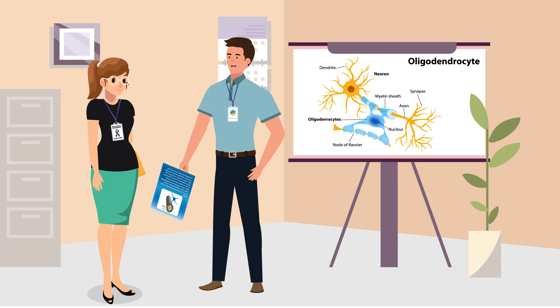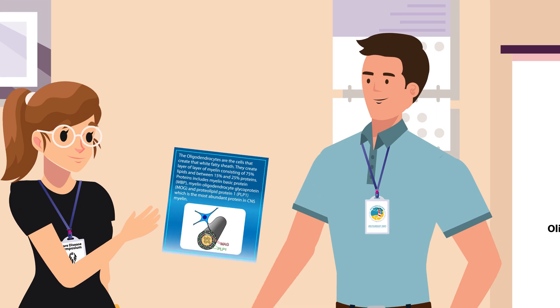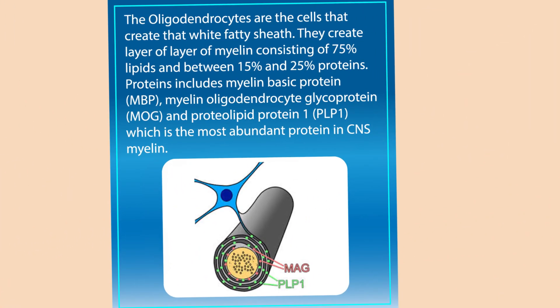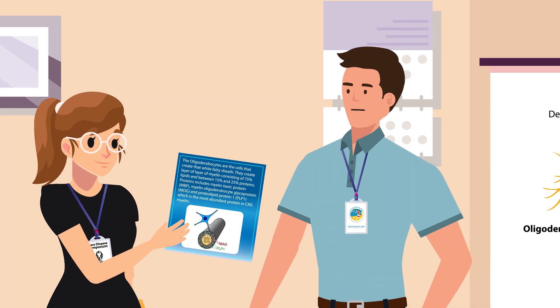The cells that make myelin are called oligodendrocytes, and they create the layer of the myelin sheath. What's important is that to produce myelin, the oligodendrocytes have a zero error tolerance policy — meaning that if there is a problem in the production line, they can't create the myelin sheaths at all, or only with very reduced quality.